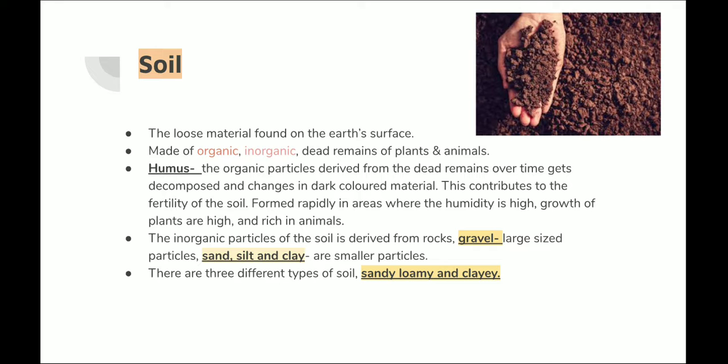The inorganic particles of soil are derived from rocks, gravel, sand, silt, and clay. Organic materials are the dead remains of plants and animals, while inorganic remains include gravel — large-sized particles — and sand. Silt and clay are finer soils. You may have seen clay pots and clay utensils; those are made of clay, which is fine soil. Silt has a little bit of sand mixed with clay.